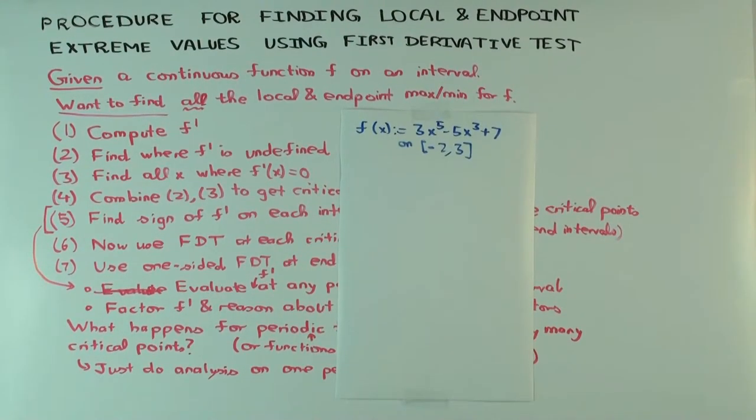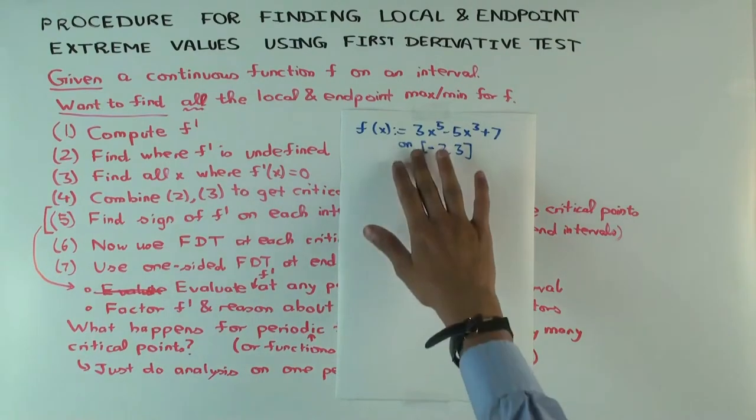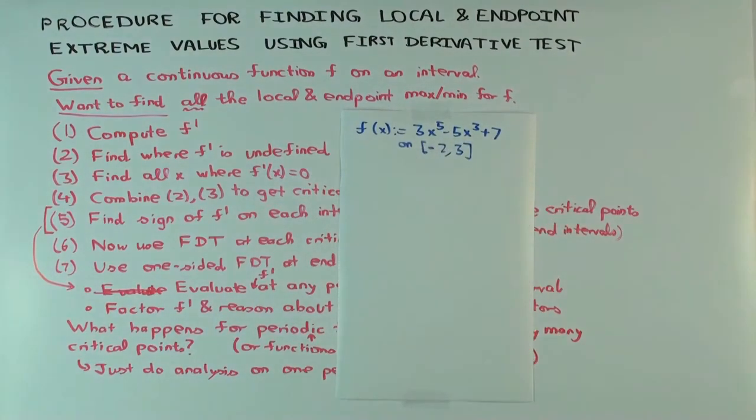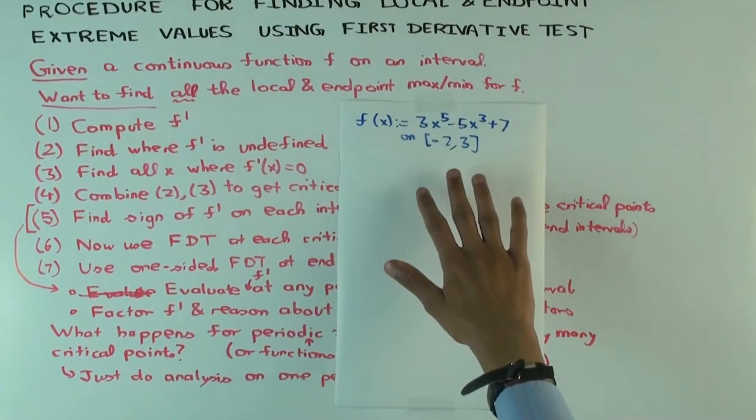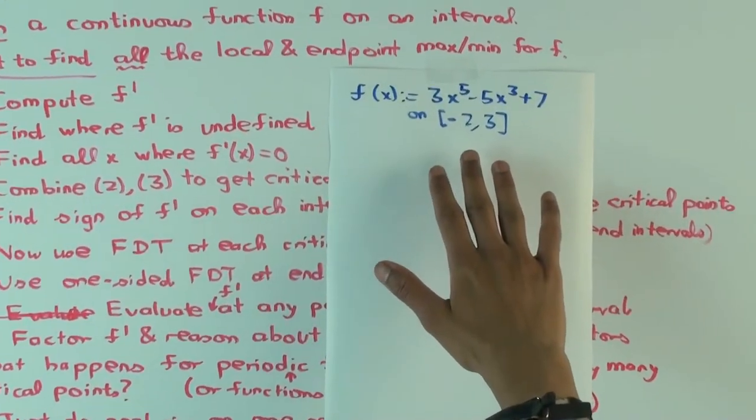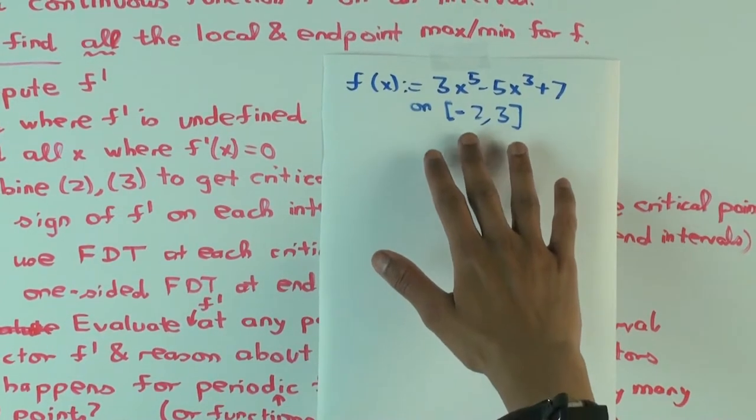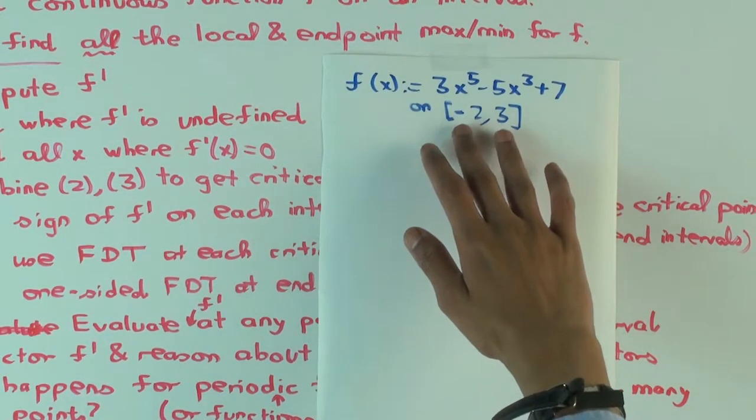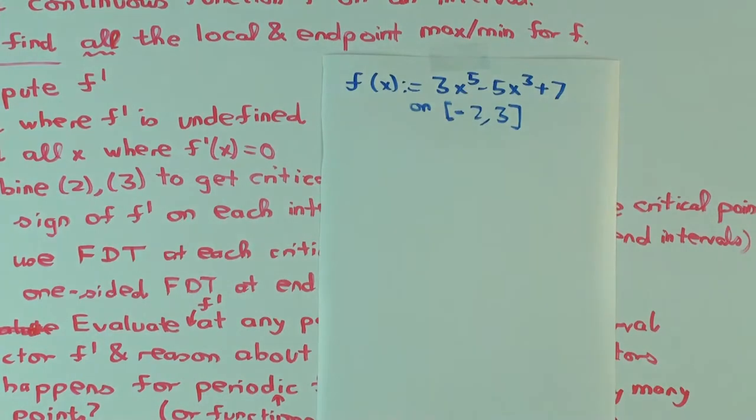So in this talk we are going to do one example of using the first derivative test to find local and endpoint extreme values. The function is this polynomial function, and the interval is negative 2 to 3. It's a closed bounded interval, which means that in addition to finding the local max min, you also have to answer the question of what is the behavior at these endpoints. You have endpoint min or max at each of them.